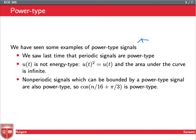Non-periodic signals which can be bounded by a power-type signal can also be power-type. So for example, if we have these aperiodic discrete time signals like cosine n over 16 plus pi over 3, remember the thing multiplying by the n, it doesn't have a pi in it, so it's not periodic probably. This thing is still power-type.